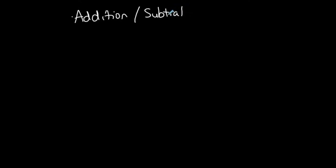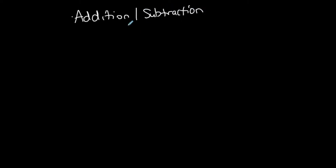Now operations — in mathematics, when we talk about operations, we're talking about the basic operations: addition, subtraction, multiplication, and division. Those are the four main operations. So when I say operations of complex numbers, I mean adding them, subtracting them, multiplying them, and dividing them.